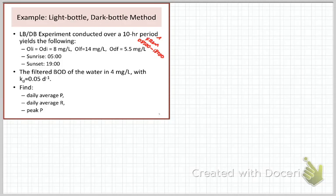You're given the initial and final DO readings in both the light and dark bottles, sunrise and sunset. So you've got a photoperiod of 14 hours between those two. And you're given the BOD in filtered water and the decomposition rate.